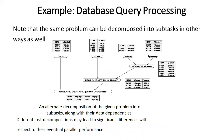The same database query problem can be decomposed into subtasks in another way. In this alternate decomposition, the white and green color sub-tables are first combined together, then the color table is combined with the year of manufacturing, and finally the color-year table is integrated with the model to satisfy the query. There may be different task dependency graphs for the same problem. Tasks generated may be of same, different, or intermediate size.